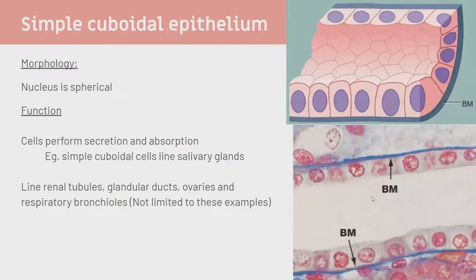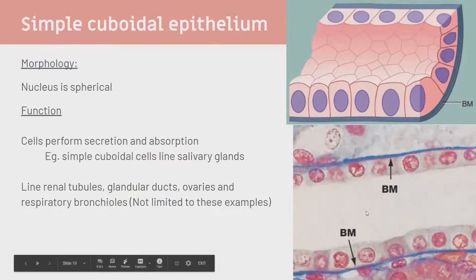Simple cuboidal epithelium looks like a cube with a spherical nucleus. These cells perform secretion and resorption. They line salivary glands, renal tubules, glandular ducts, and ovaries.